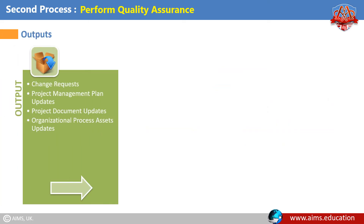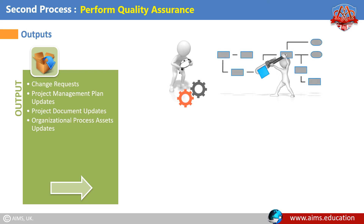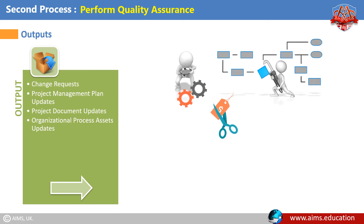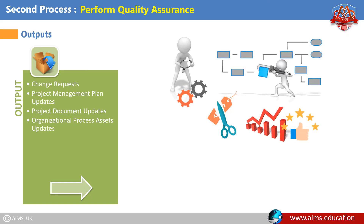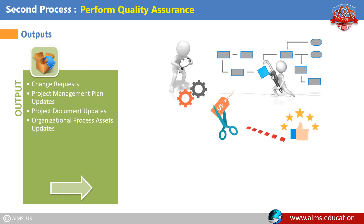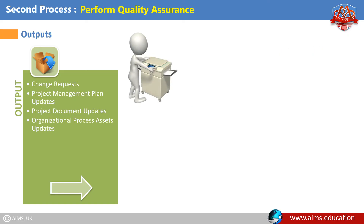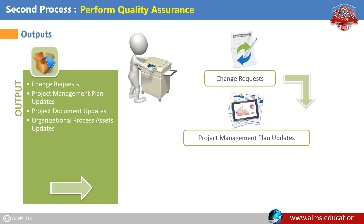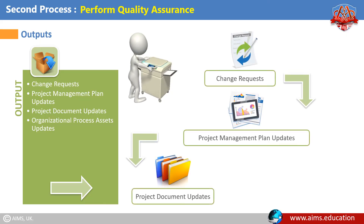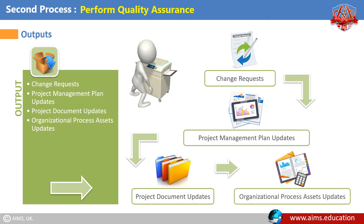Outputs of Perform Quality Assurance: The intended outcome of quality audit and process improvement activities is to reduce the cost of quality and/or increase customer satisfaction. The outputs are change requests, project management plan updates, project document updates, and organizational process asset updates.